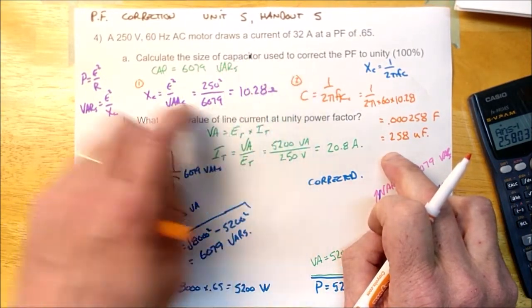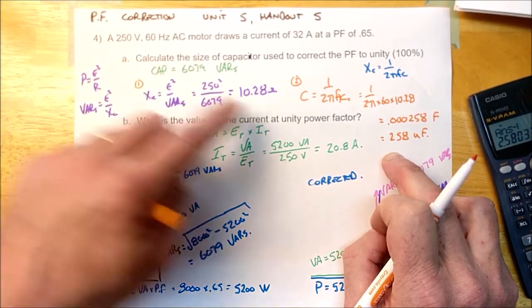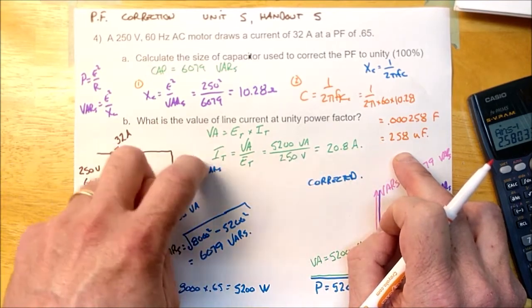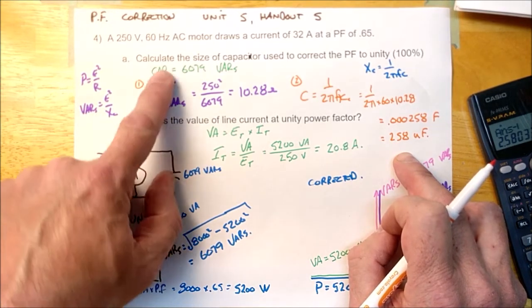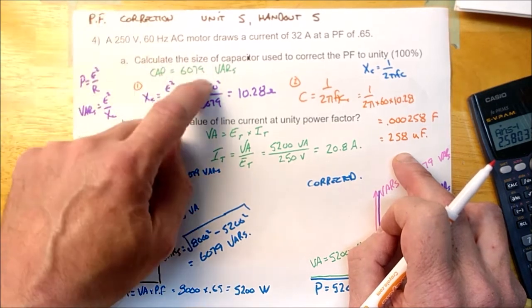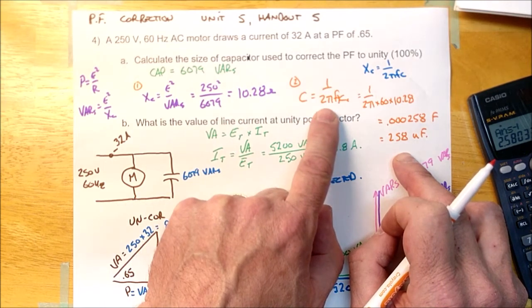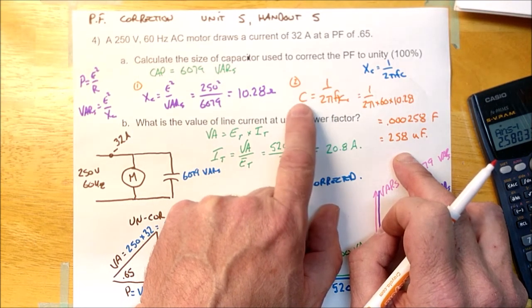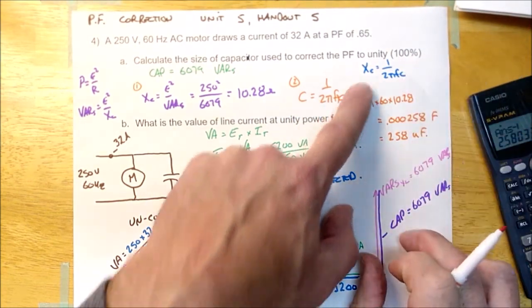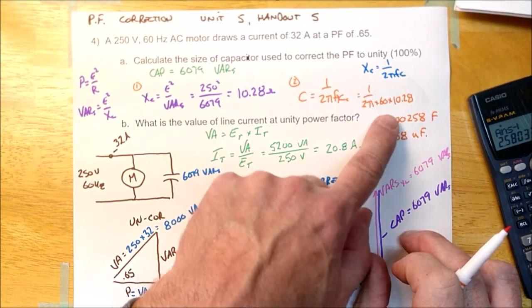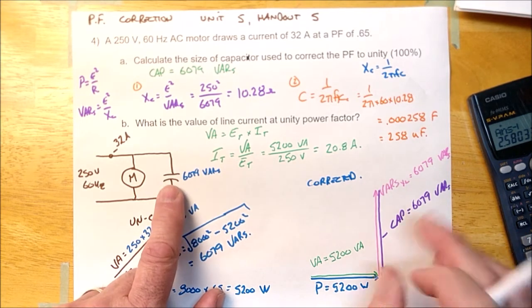So two steps. And this question doesn't even ask for it in microfarads, but some of your homework will. After you've calculated how many VARs it is, the way to convert that into farads or microfarads is to apply this formula. It's always going to look like this. XC is equal to E squared over VARs. It is the circuit current squared over the VARs of the capacitor, 10.208 ohms. The next thing it's going to ask is how many farads it is. And it's this formula right here, but it's transposed for C, 1 over 2πFXC. There it is, 258 microfarads is the capacitor size.